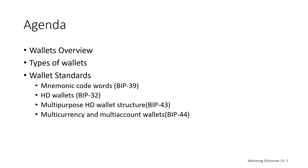Another reason for similarity has to do with the wallet being essentially your master private key, then generating other private keys. You can use the same master private key to hold your Bitcoin as well as your Ethereum, so you just have one wallet to handle multiple types of cryptocurrency if we're following the same standards.